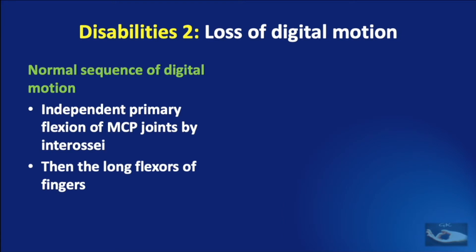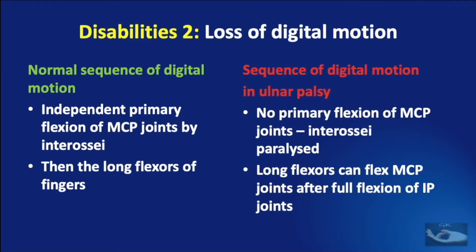The second disability is the loss of digital motion. All patients with Ulnar Nerve Palsy can make a full fist, but the sequence of flexion is totally changed. Normal sequence consists of first independent primary flexion of the metacarpophalangeal joints by the interossei, then the long flexors complete the flexion. In Ulnar Nerve Palsy, because the interossei are paralyzed, the long flexors take over MCP joint flexion — but only after full flexion of the interphalangeal joints.